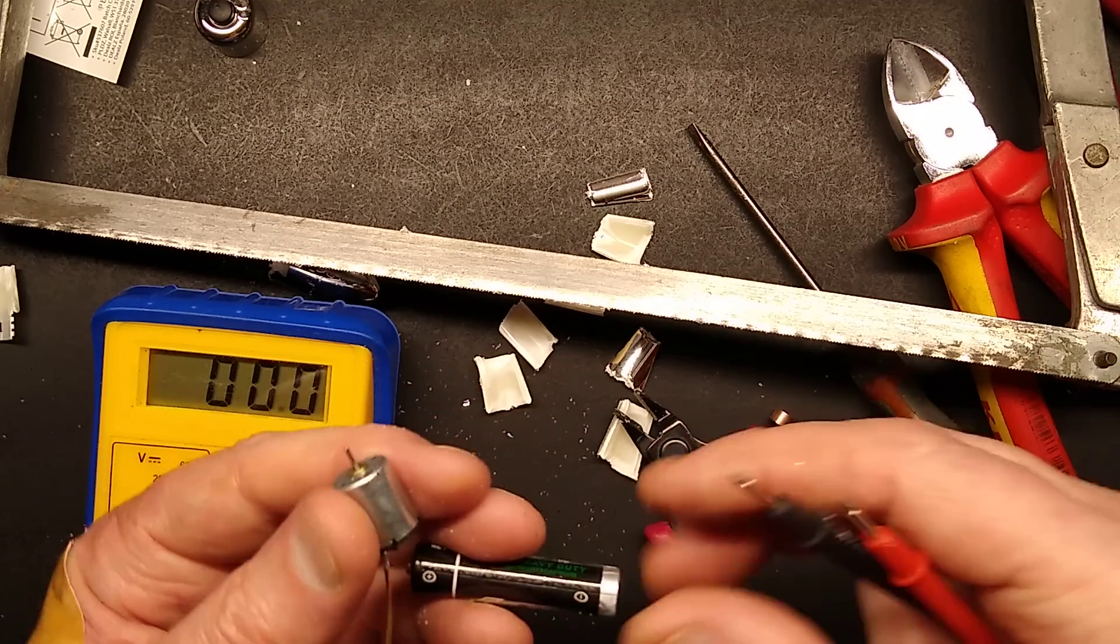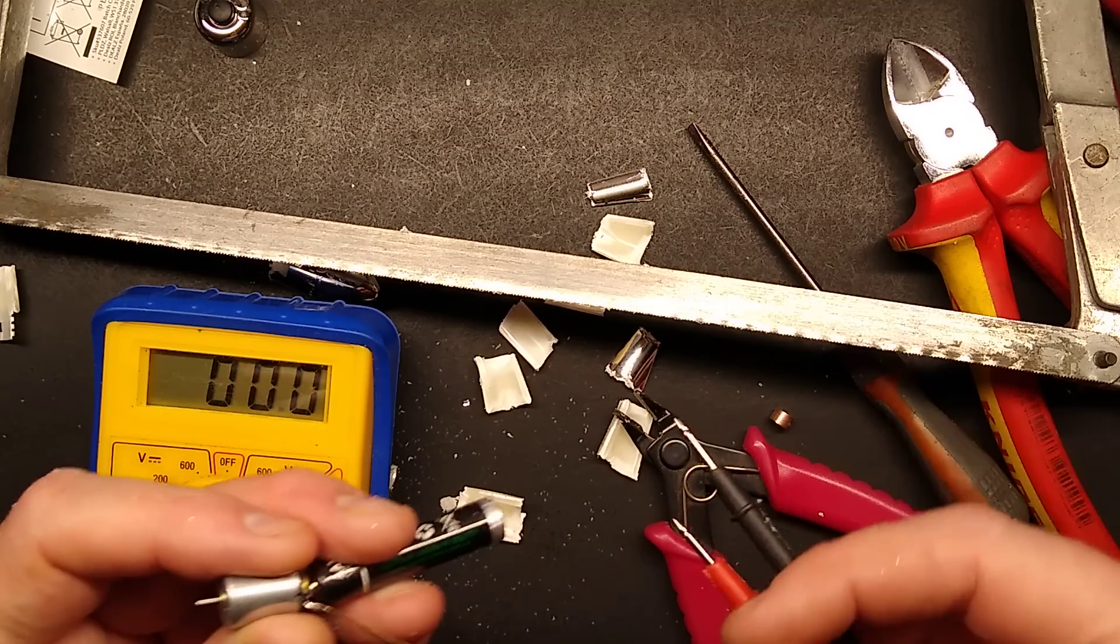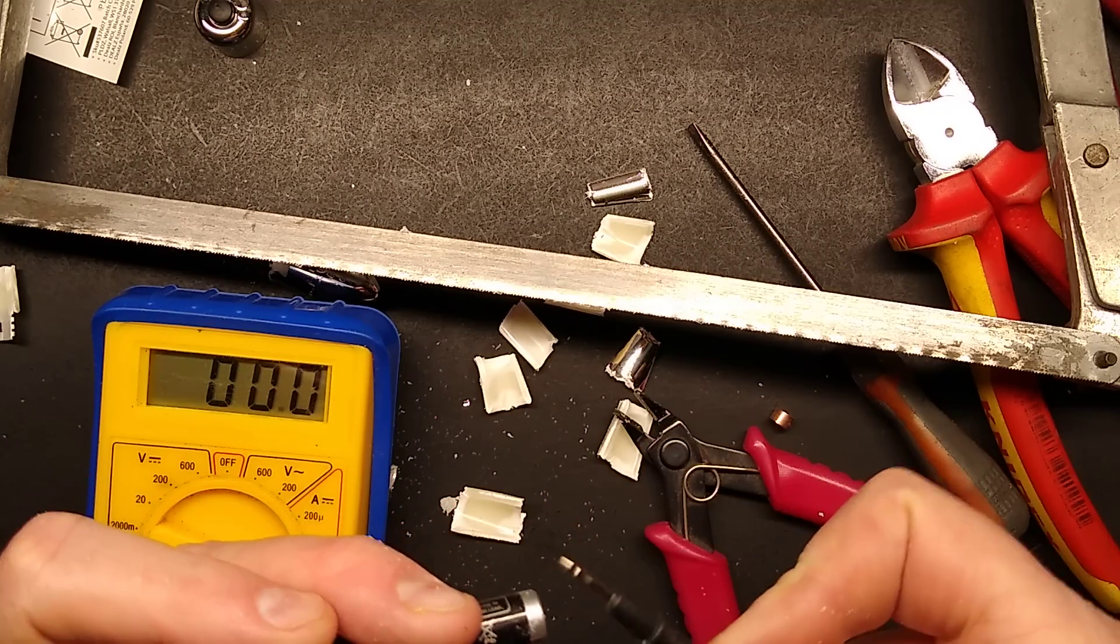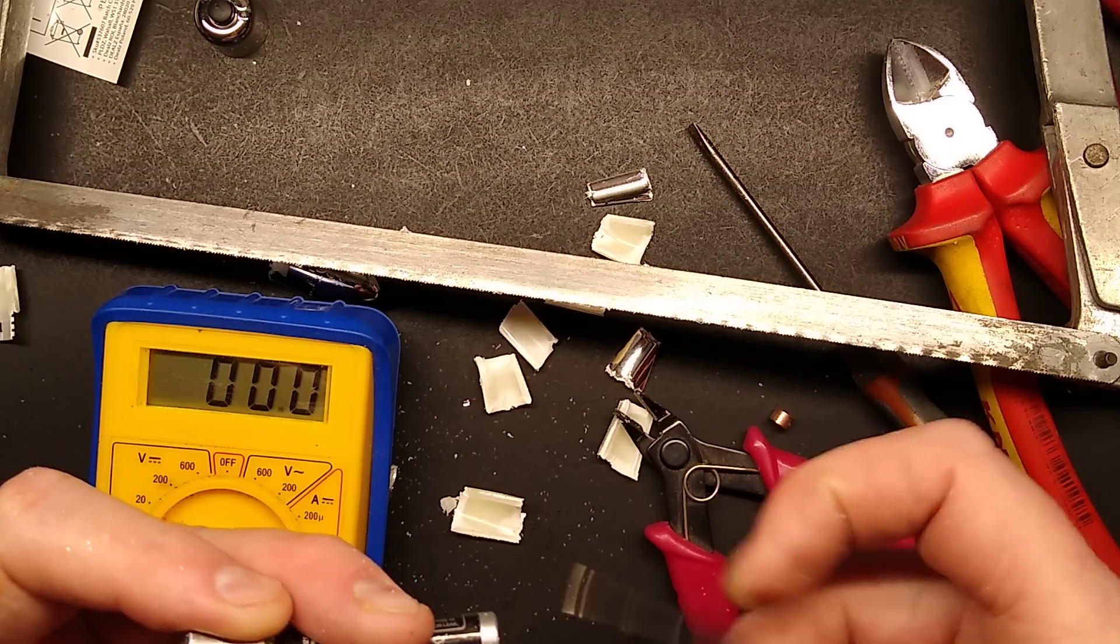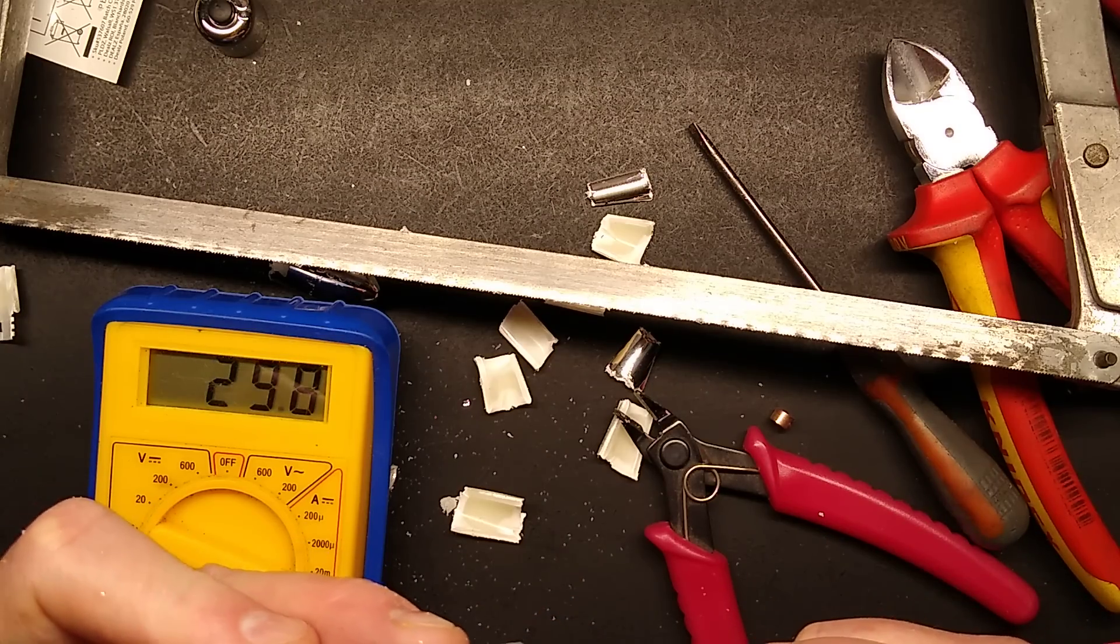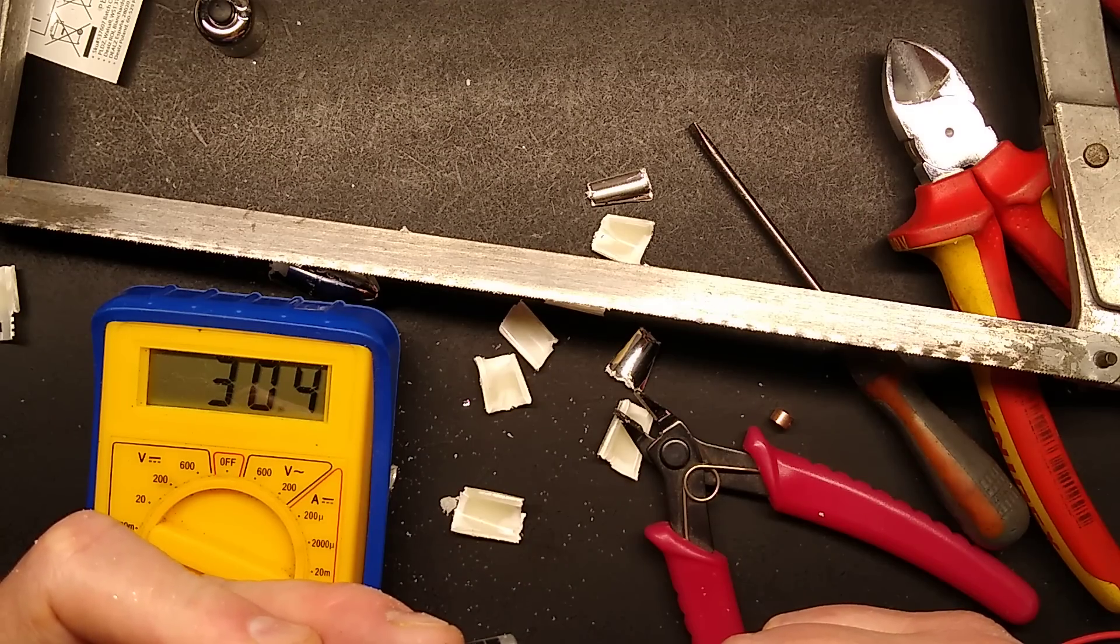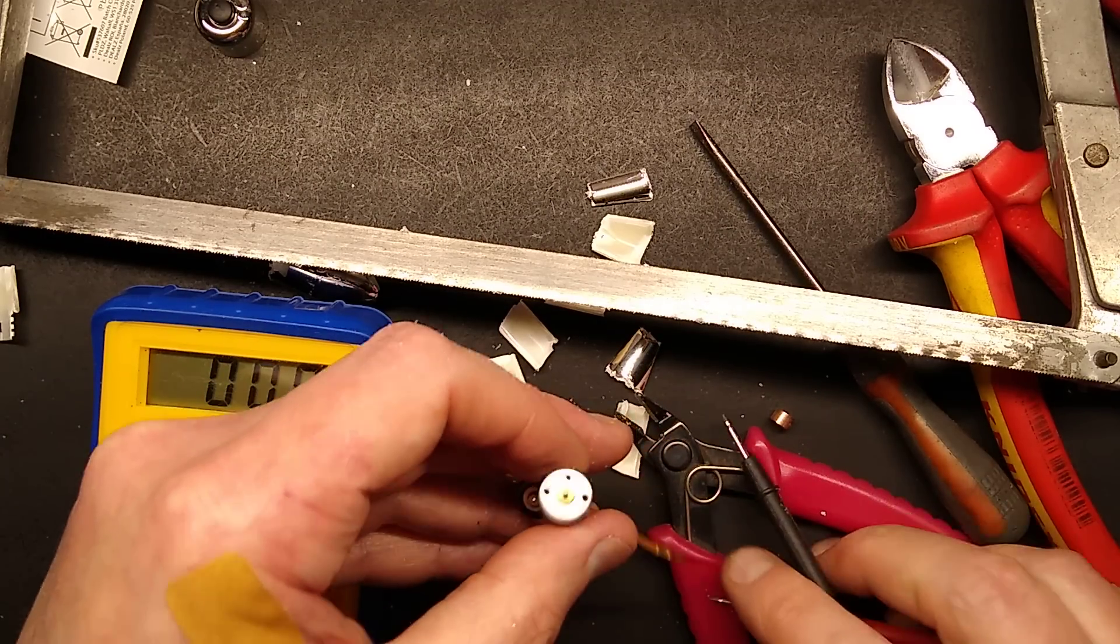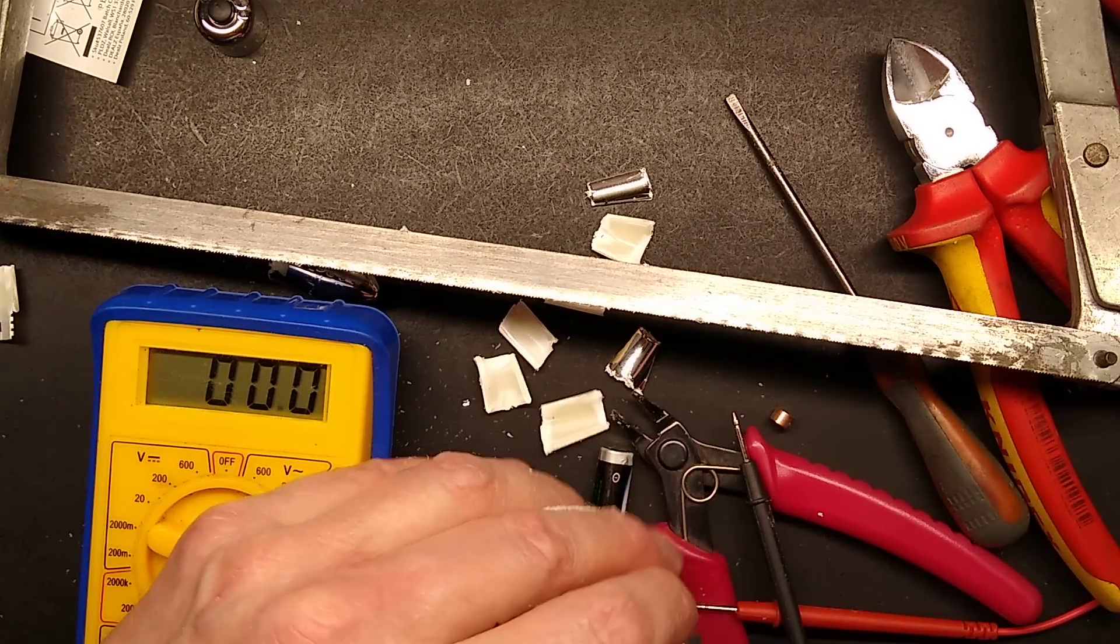The weight comes off fairly easily. The motor current with no load is... fumbling with connections... where crocodile clips would be easier... 30 milliamps with no vibration because there's no eccentric weight in it. Interesting little motor. I should measure the shaft - I'll give you the measurements.